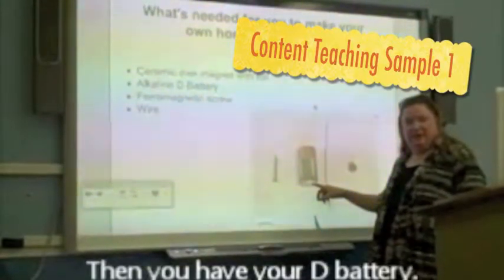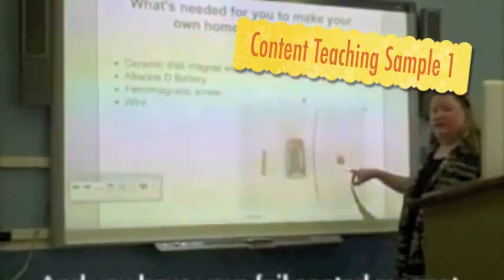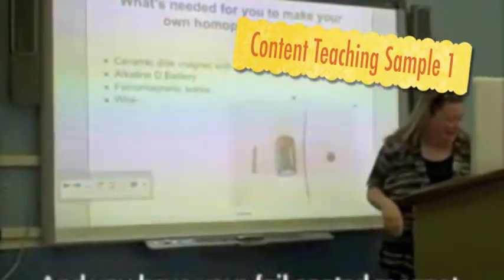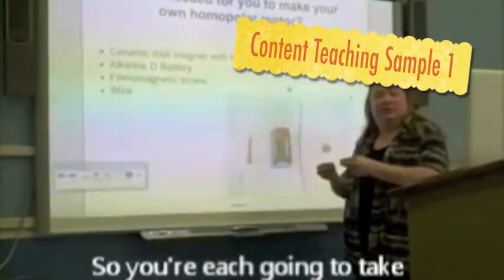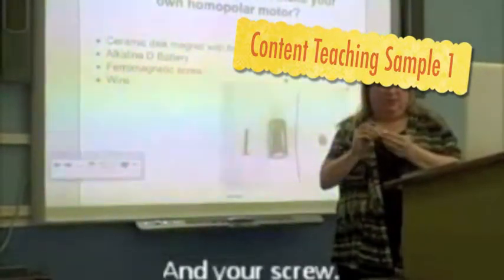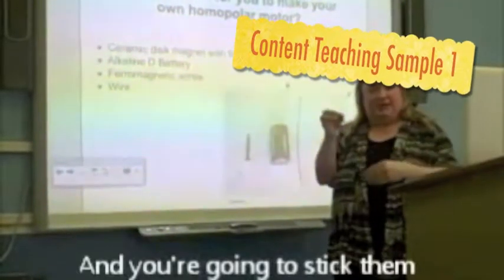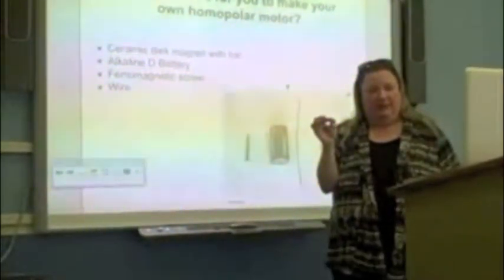Then you have your D battery, you have your piece of wire, and you have your foil coated magnet. So you're each going to take your magnet and your screw, and you're going to stick them together so it's pointing up. Let me know when you all have it.